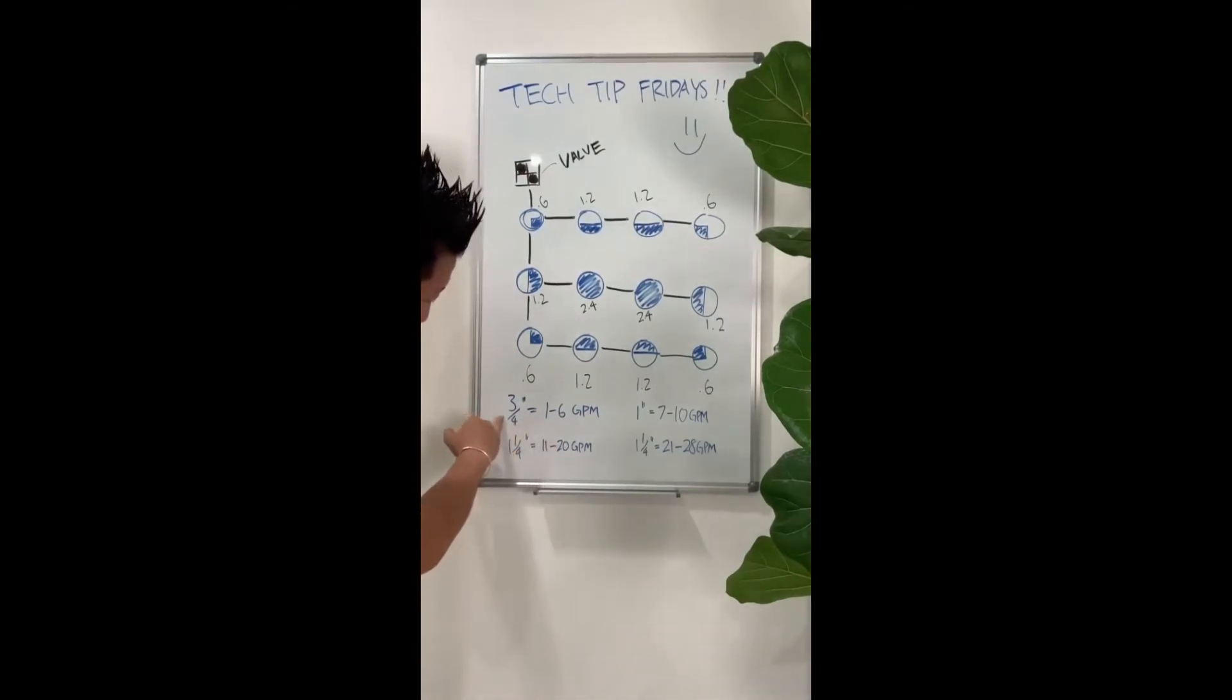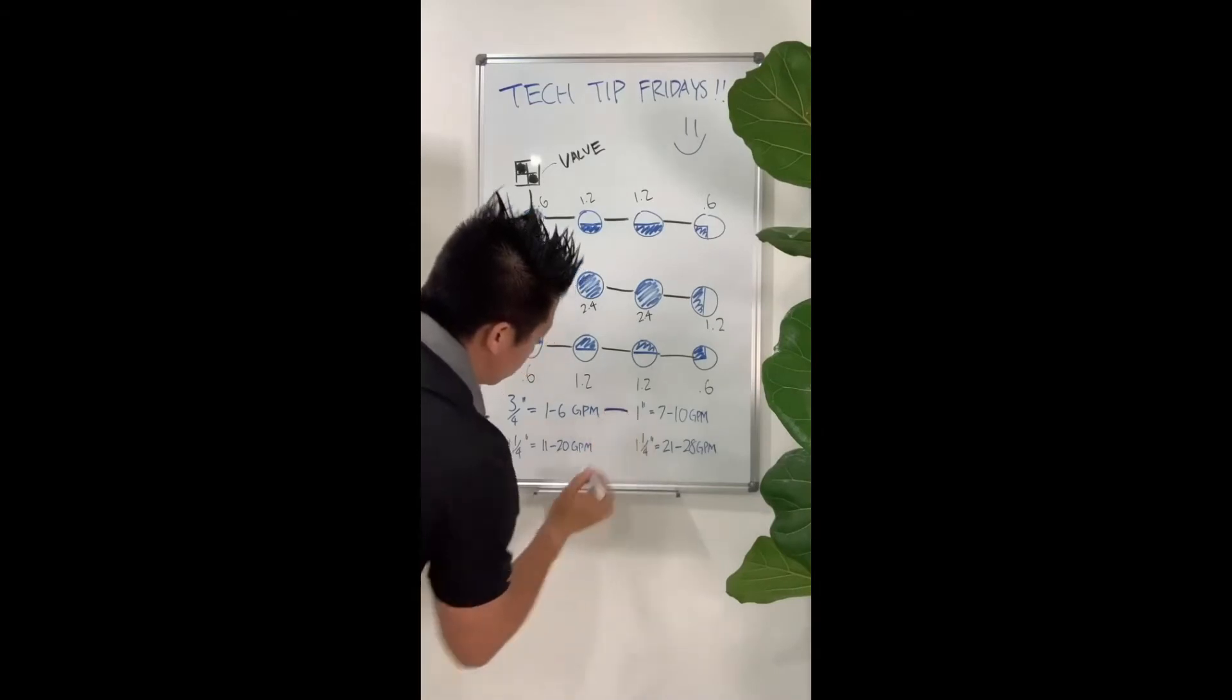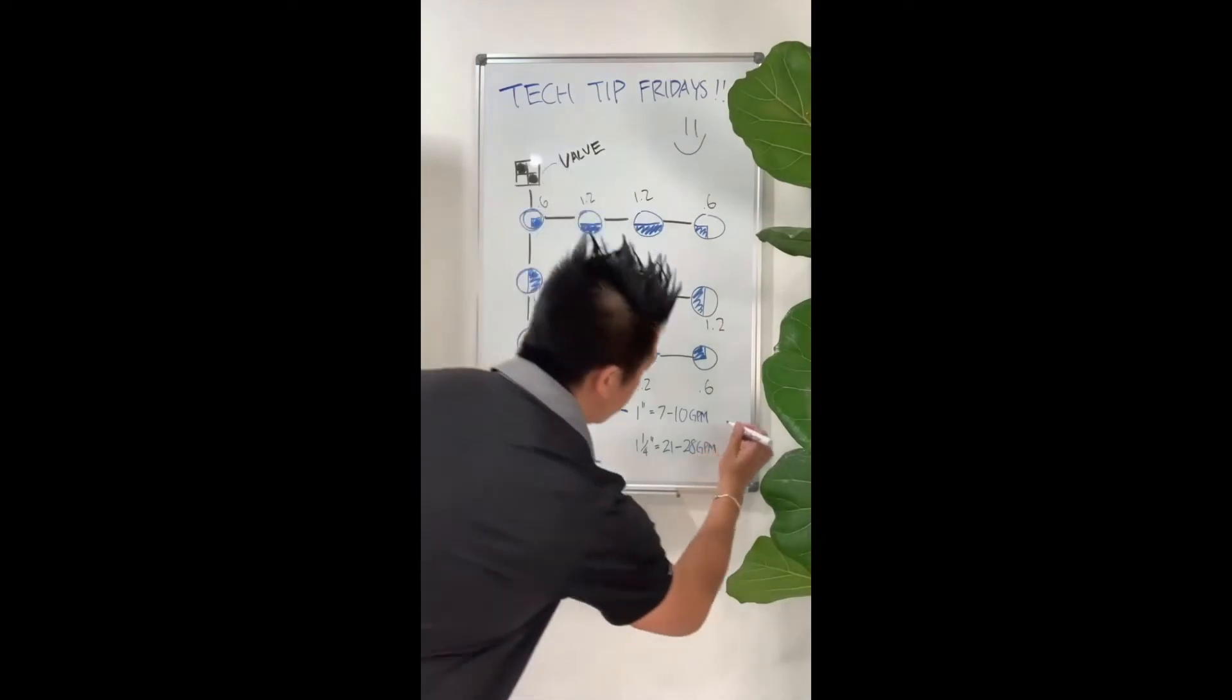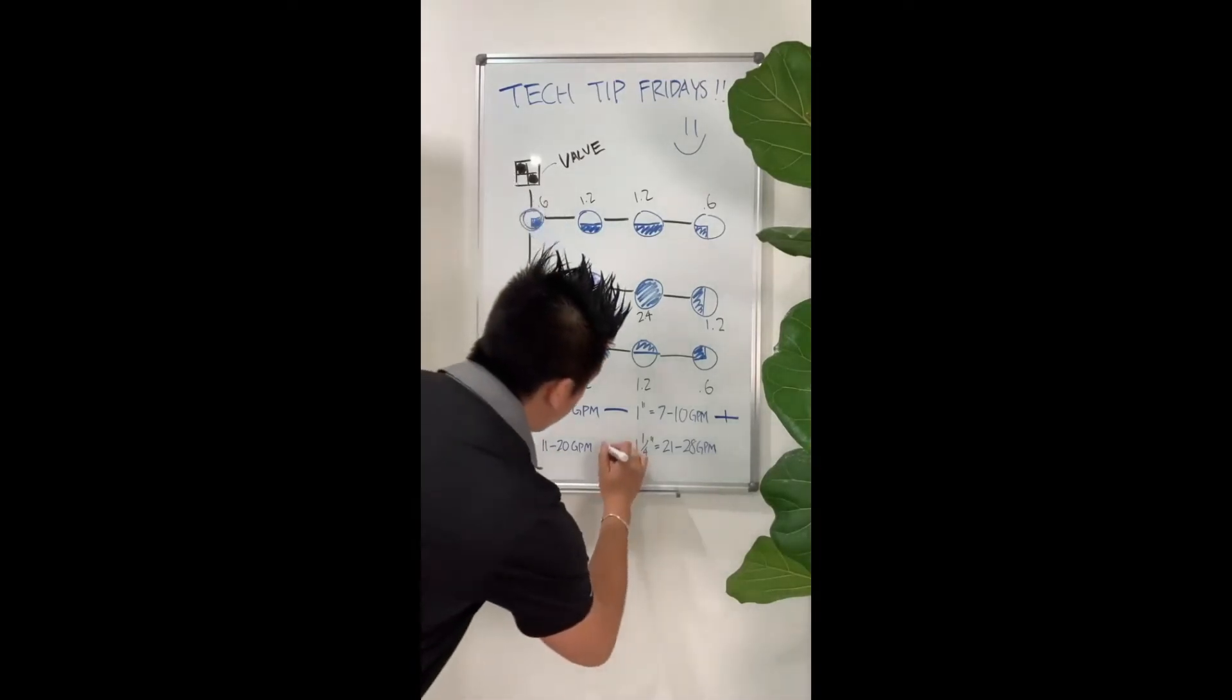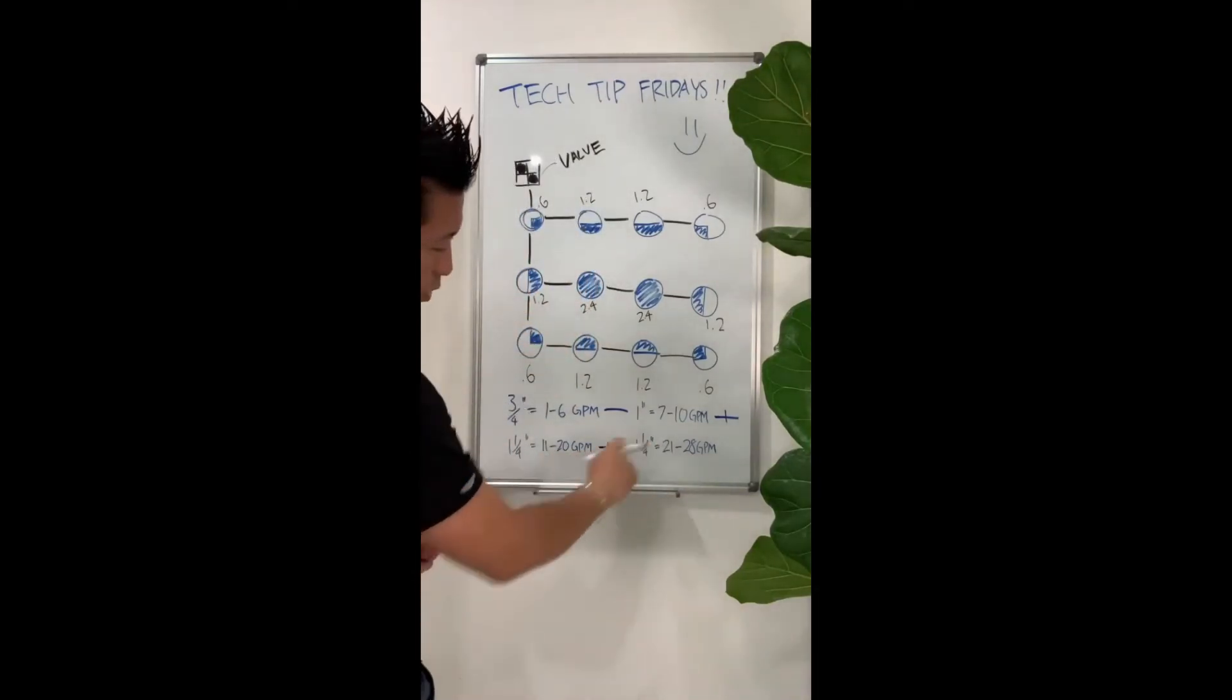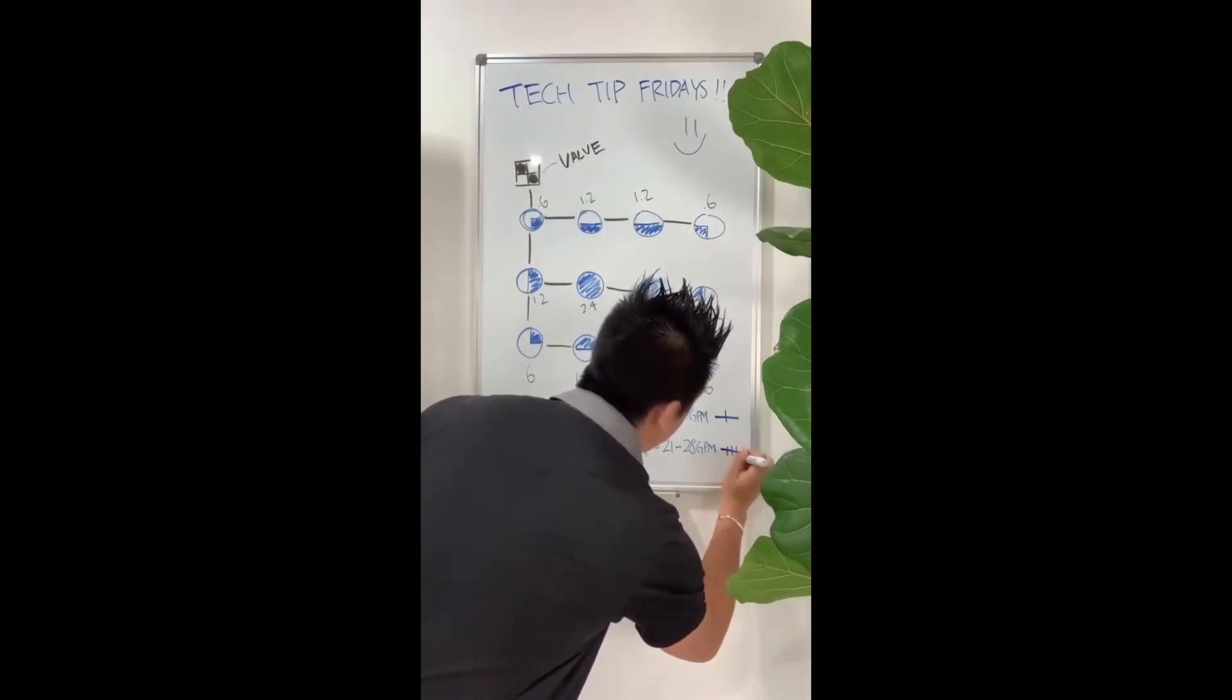So you'll notice that 3 quarter inch pipe can do 1 to 6 GPMs. And we'll put a symbol here with a lateral with no tick marks. And then we have a 1 inch pipe that can do 7 to 10 GPMs. So we'll go ahead and put a lateral there with 1 tick mark. And a 1.25 inch pipe can do 11 to 20 GPMs, and we'll put 3 tick marks there.